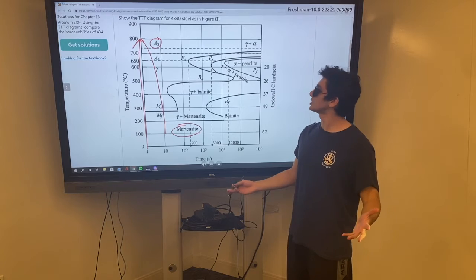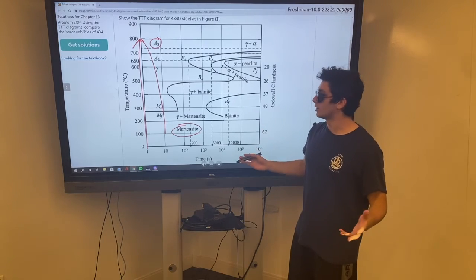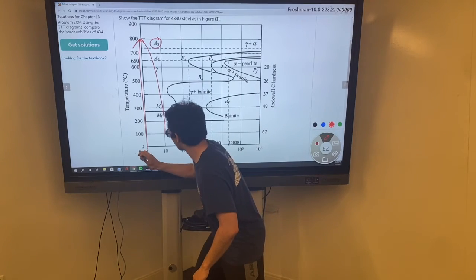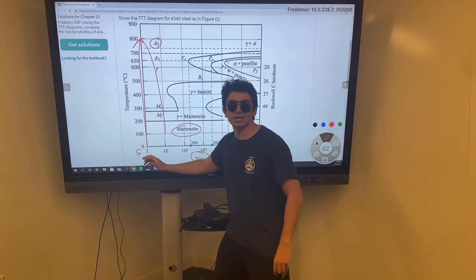So, what's the difference? What's the difference from the plain carbon one? The difference is in the scaling of the time. Let's take a look. Before, the nose was at 0.5 seconds.